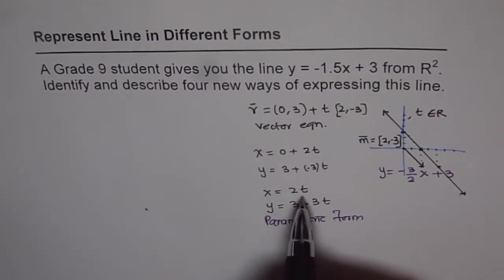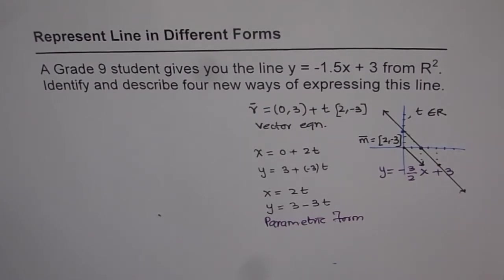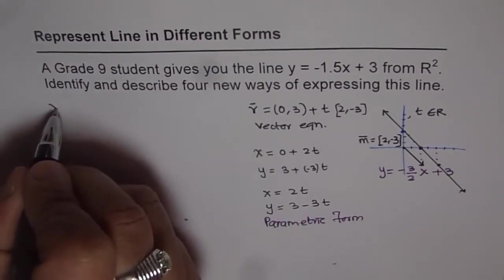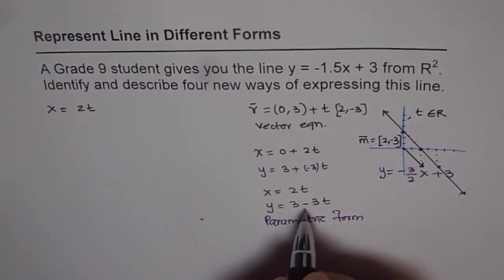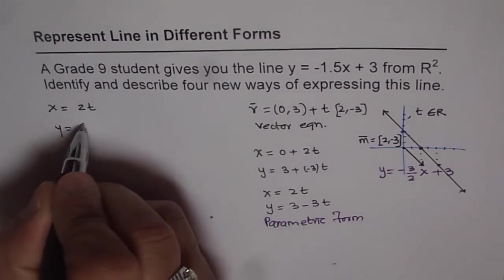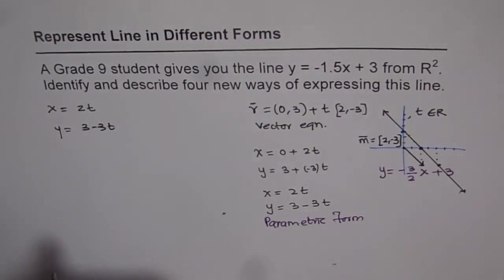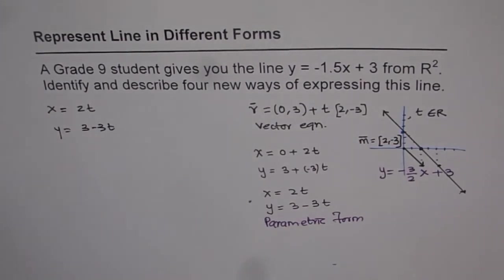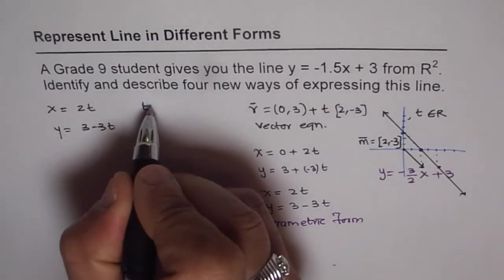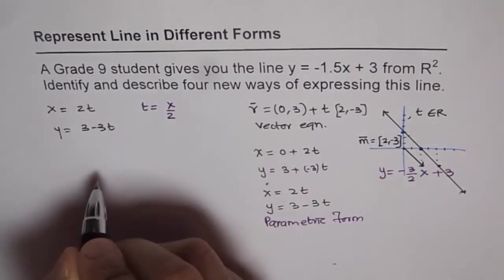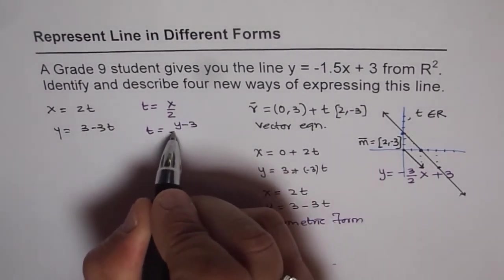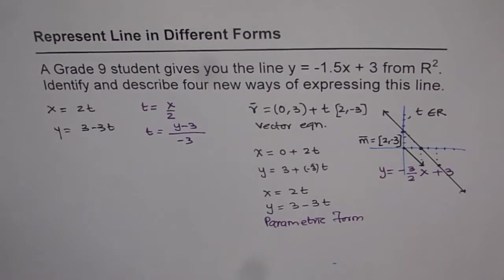Let us explore this parametric form next level. We will try to find what t is from here. If we try to find what t is, then we know x is equals to 2t. Let me write this equation once again: x equals 2t and y is equals to 3 - 3t. Now, from these two equations, I can write what t is. From this equation, we can find t is equals to x/2. And from here, we can say t equals (y - 3)/(-3).